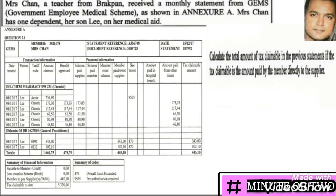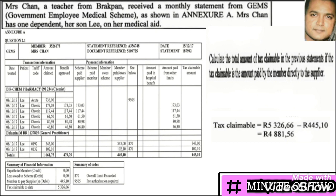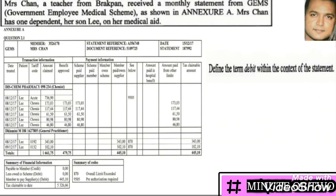Calculate the total amount of tax claimable in the previous statement, given that the tax claimable is the amount paid by the member directly to the supplier. We need to remove the amount paid directly to the supplier. Looking at the document on the extreme left at the bottom, there is a note that says 'tax claimable to date' showing 5326.66. Taking this amount and removing the 445.10 paid directly to the supplier, we arrive at 4881.56.